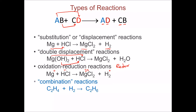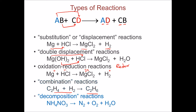The fourth type is called combination reactions, where you start with a larger number of reactants and end up with a smaller number of products — reactants combine to make products. The opposite of that is decomposition reactions, where you start with a smaller number of reactants and end up with a much larger number of products.